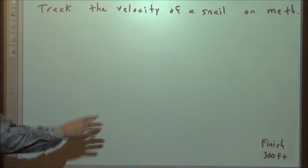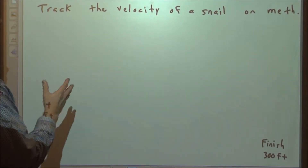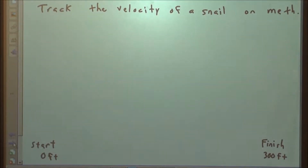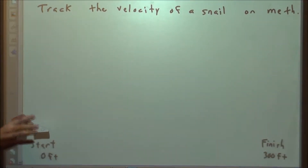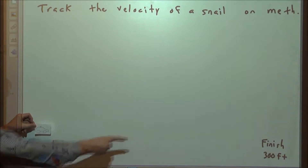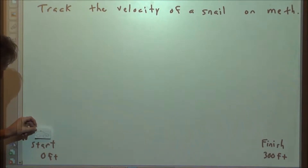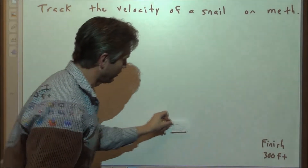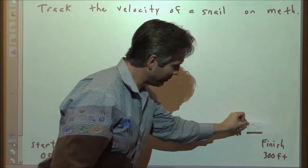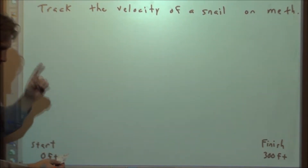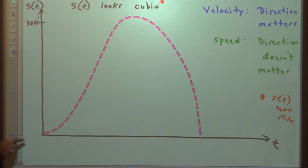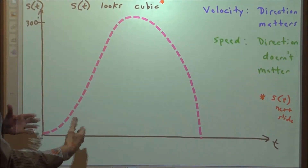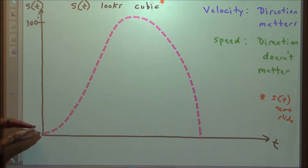Here's probably the most classic calculus problem: an object traveling on a line. Let's suppose we want to track the position of a snail. The car starts at zero feet, speeds up to 300 feet, and then comes back in reverse. The car is going to speed up, go real fast, then slow down and come to a stop. Then it's going to turn around and come back faster and faster. We're going to model the distance traveled over the course of time — where is this object in relationship to the starting point, from 0 to 300 feet?